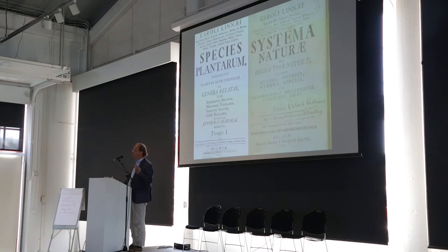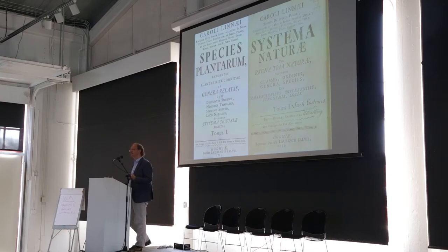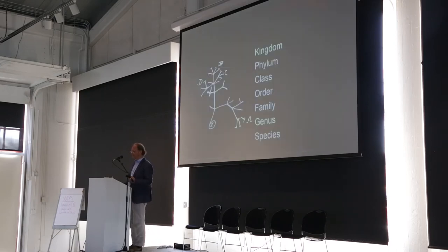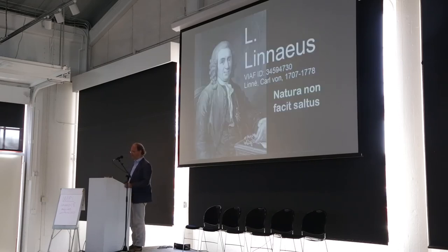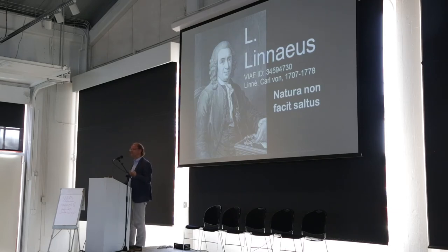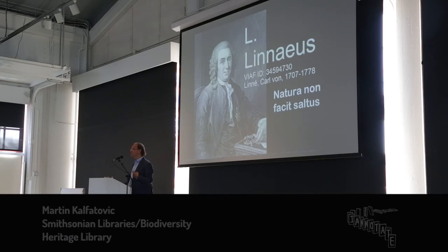Linnaeus had two key books — Species Plantarum and Systema Naturae — published in 1753 and 1758, which determined how taxonomic organisms and species are named. That's the familiar binomial: Homo sapiens, and so on. You can compile them into the familiar taxonomic chart. Linnaeus said that nature doesn't take leaps — natura non facit saltus — but humans like to take leaps, moving from one thing to another, and that's one of the key things that annotation enables us to do.